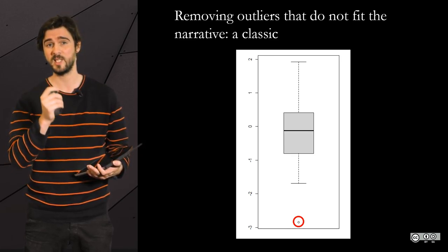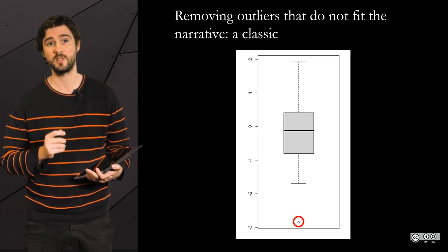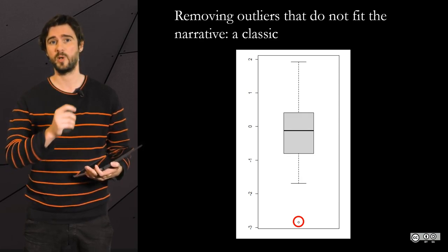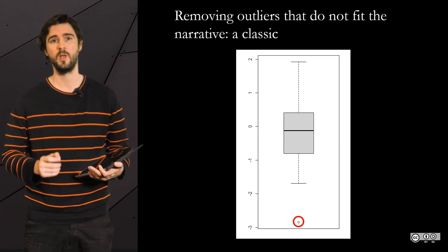In some instances, it can be legitimate to remove outliers. But if you do so, you should always mention it and explain your rationale. Unlike what was done in the Reinhardt and Rogoff article.